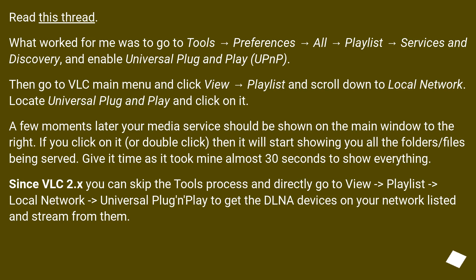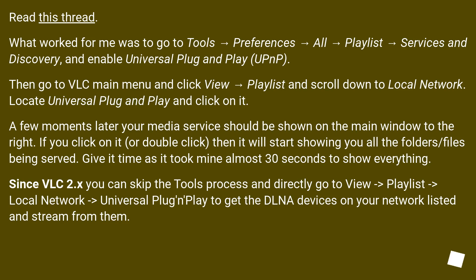Then go to the VLC Main Menu and click View > Playlist and scroll down to Local Network. Locate Universal Plug & Play and click on it. A few moments later your media service should be shown on the main window to the right. If you click or double-click on it, it will start showing you all the folders and files being served. Give it time, as it took mine almost 30 seconds to show everything.